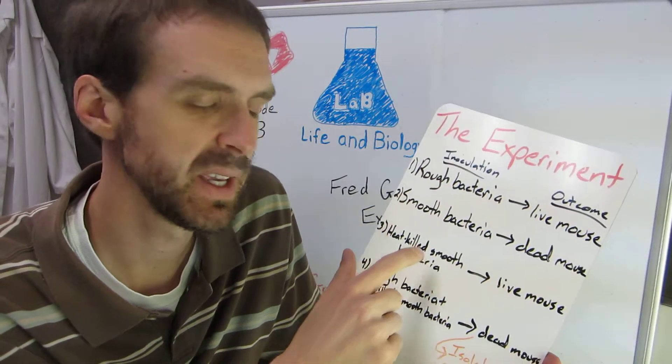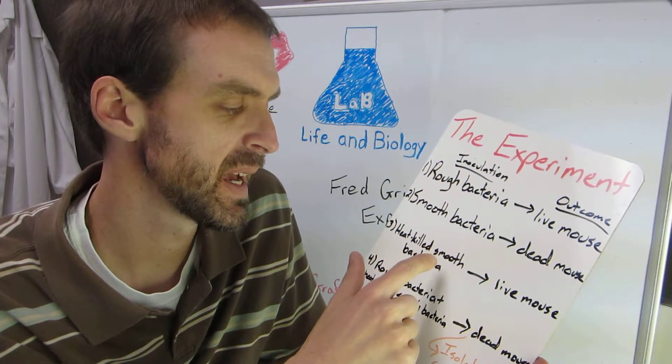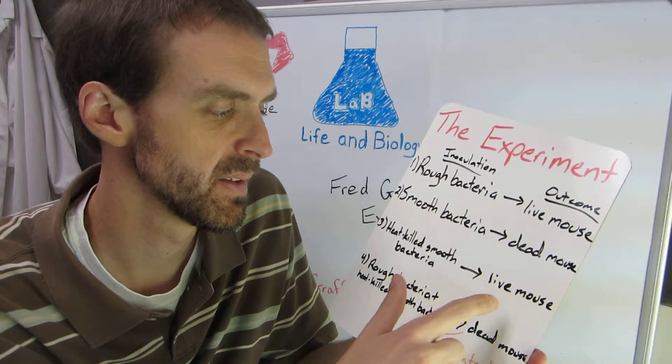If you take these smooth bacteria and heat kill them, the mouse will live. So the bacteria have to be alive to kill the mouse.